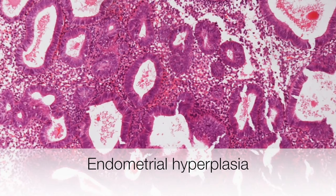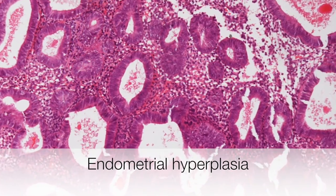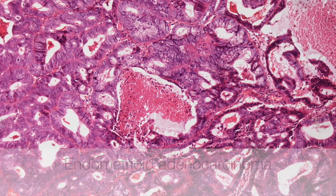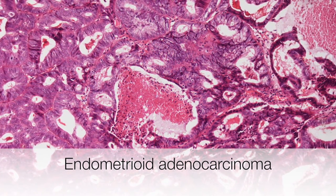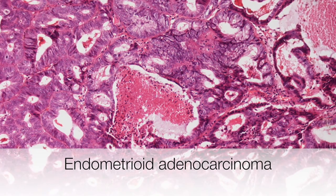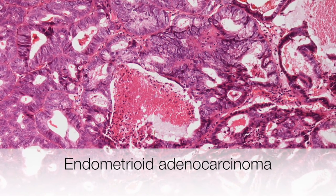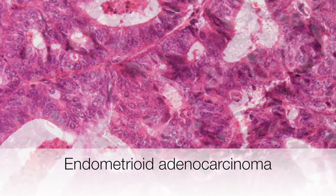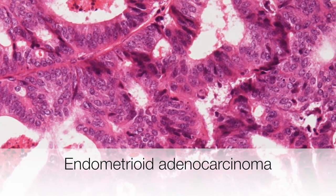This is an example of endometrial hyperplasia, and this is an example of endometrioid adenocarcinoma with a clearly abnormal glandular architecture where many of the glands are fused. And this is a higher power view of the adenocarcinoma.